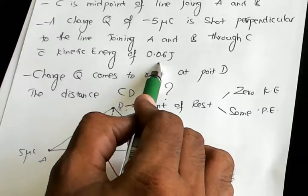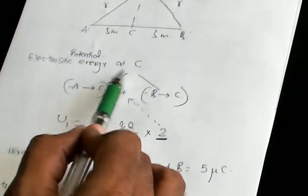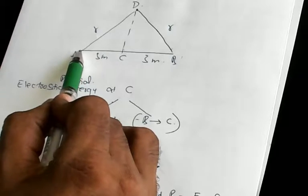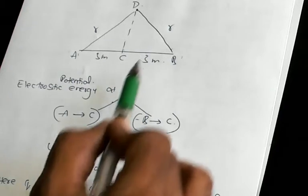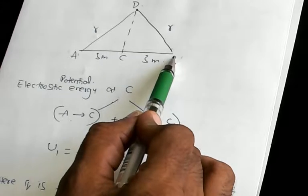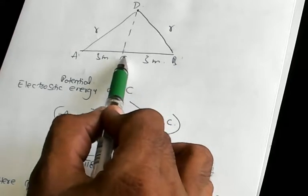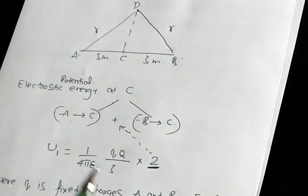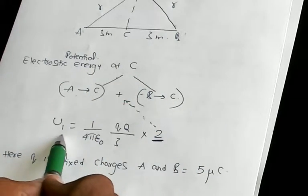So the potential energy at C minus the potential energy at D equals 0.06 joules. Now let us look into how to calculate that — very simple. What is the potential energy when it is at point C? Let us call it U1. That U1 is equal to, based on Coulomb's law...